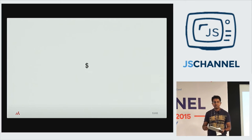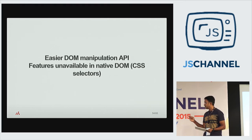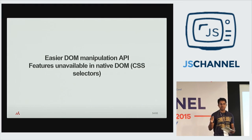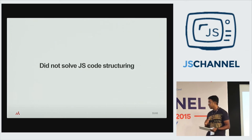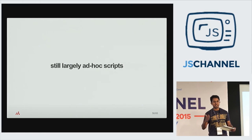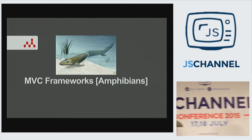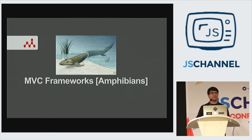And then this happened — the ubiquitous dollar sign. Dollar was first used in Prototype, but became more associated with jQuery. jQuery offered two key things: easier DOM manipulation and CSS selectors — still the gold standard for abstraction. However, it did not solve the code structuring problem. You were still writing largely ad hoc scripts. jQuery plugins were just more JS code — not modules or anything that fit in a very good structural way.